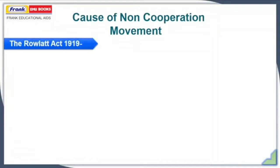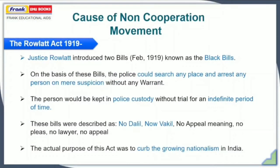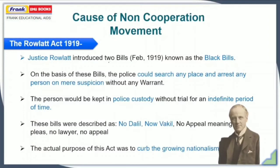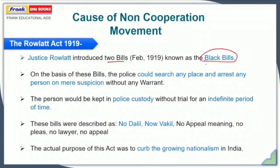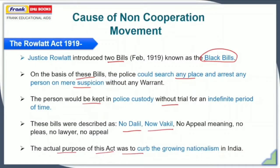Getting started with the non-cooperation movement and its causes, the first is the Rowlett Act of 1919. In February 1919, Justice Sidney Rowlett introduced two bills, popularly termed as Black Bills. On the basis of these bills, the police could now search any place or arrest any person on bare suspicion without issuing any warrant. That person would be kept in police custody without trial for an indefinite period of time. These bills were described as 'No Dalil, No Waqeel.' The actual purpose was to curb the growing nationalism in India, clearly violating individual liberty and freedom of speech. This was one of the reasons behind the launch of the non-cooperation movement.